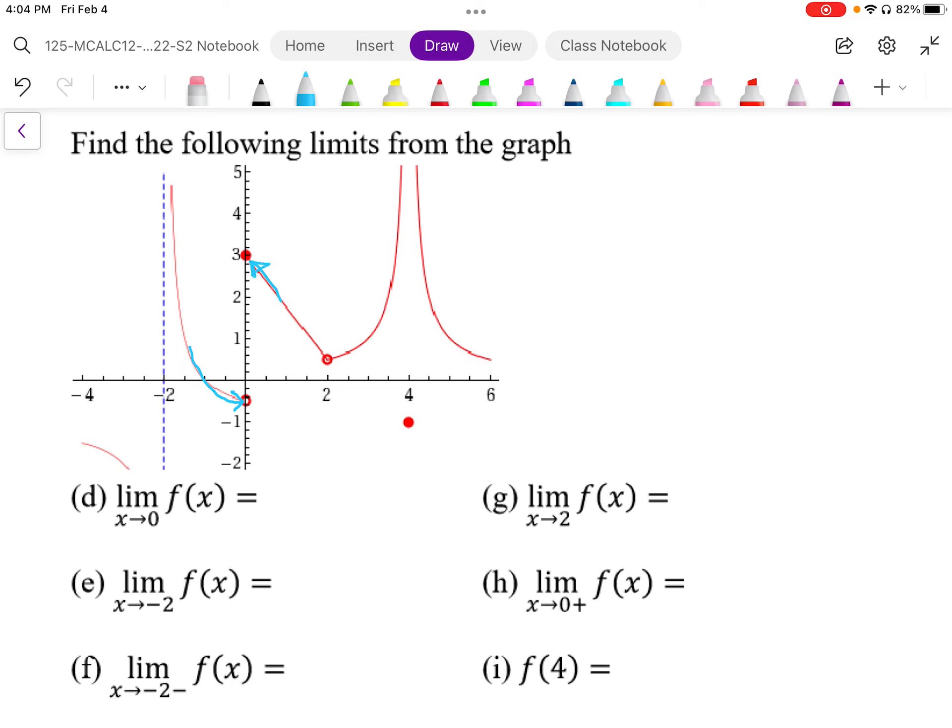Well if that's the case, that means that this is not going to the same point from both sides, so we have to say that the limit does not exist. As a one-sided limit, they exist, but as two-sided limits, it doesn't exist.